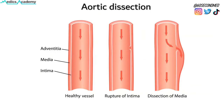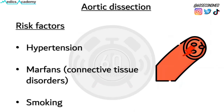Aortic dissection occurs when there is a tear in the intima, allowing blood to flow into the aortic wall and dissect the layers apart. Risk factors for aortic dissection include hypertension, connective tissue disorders such as Marfan's, and smoking.